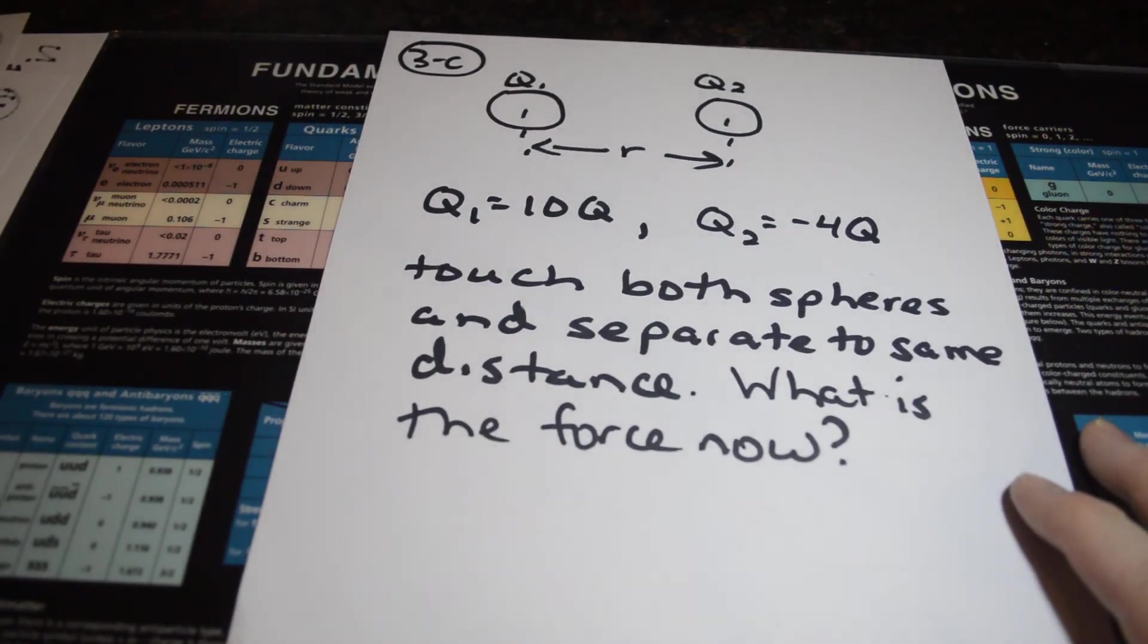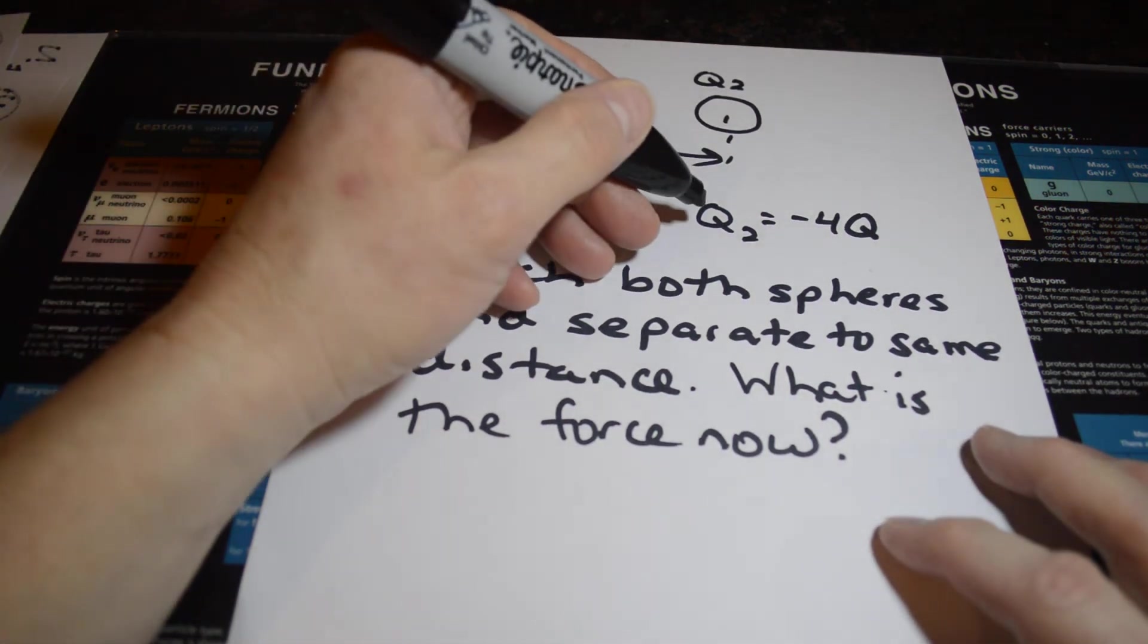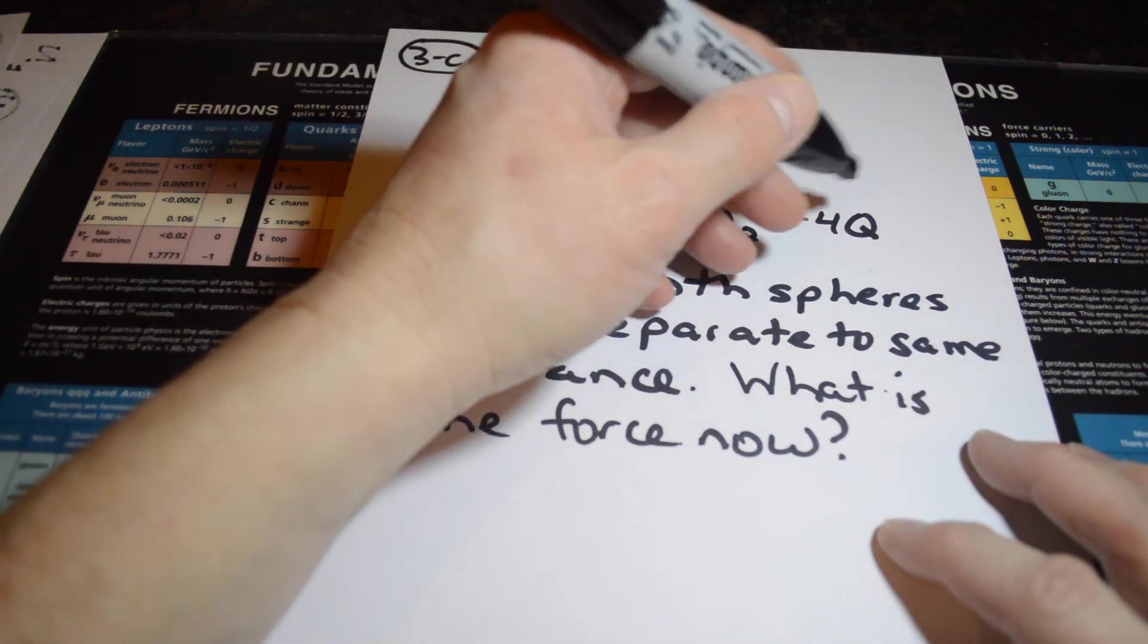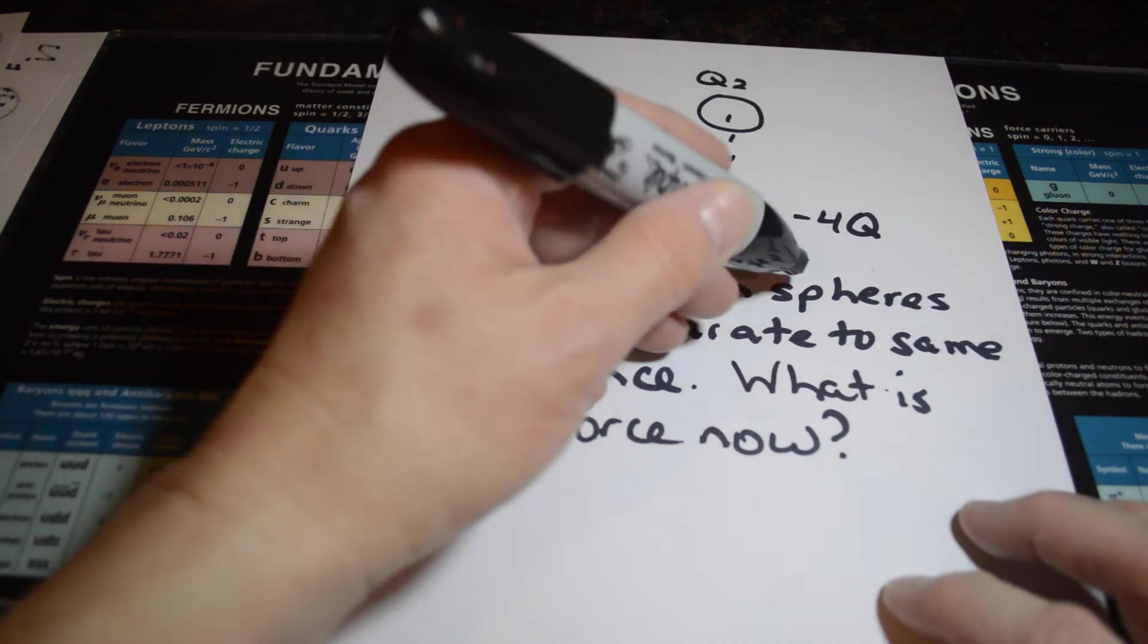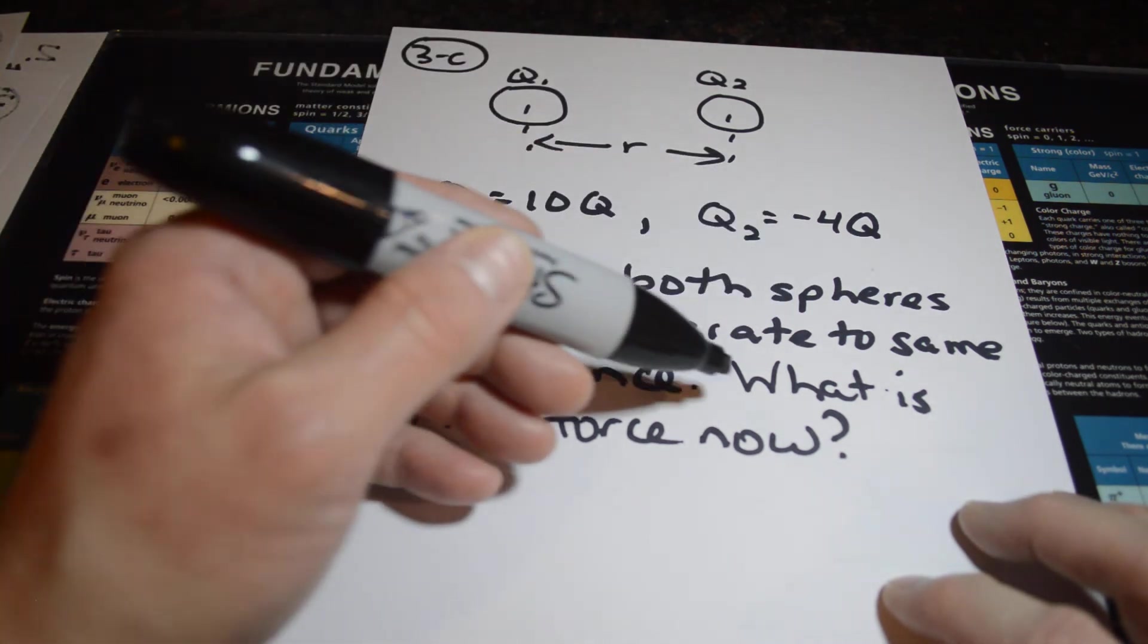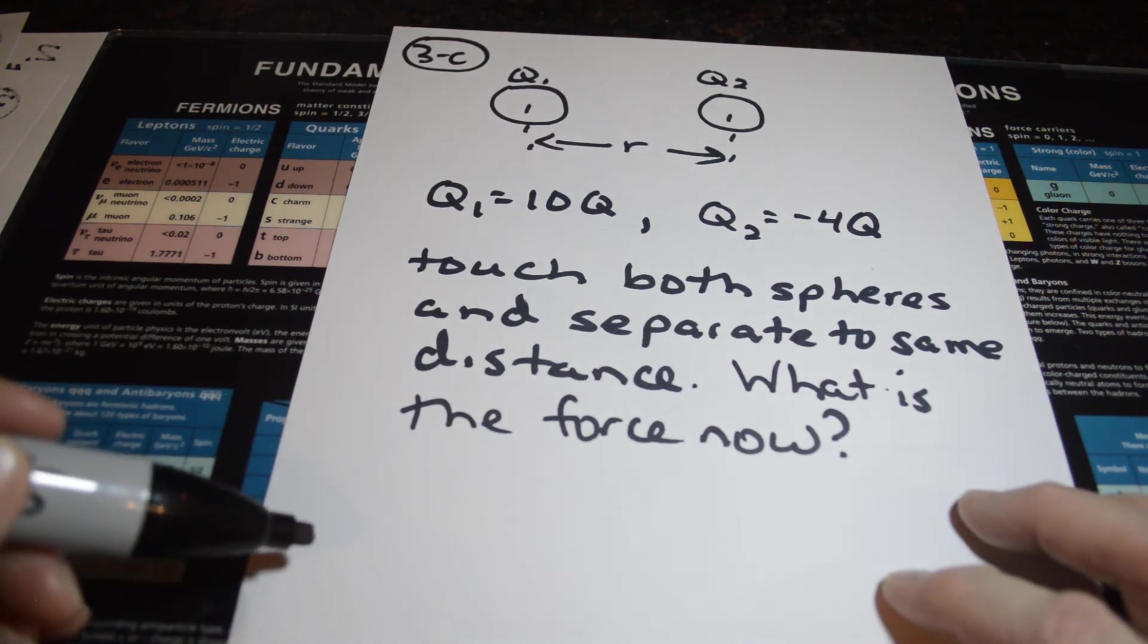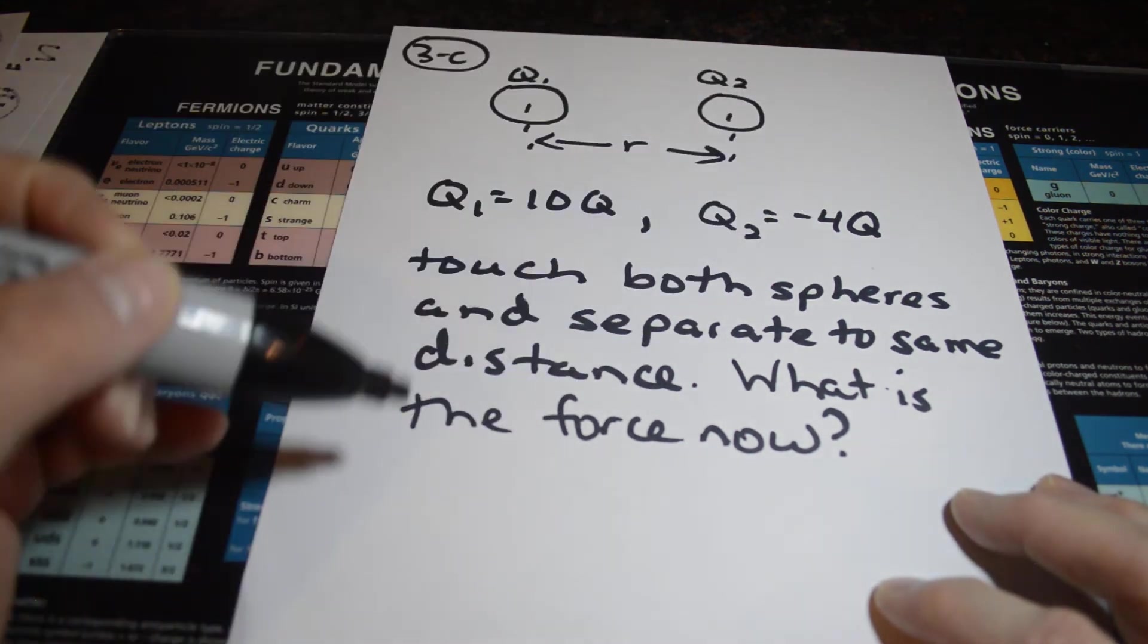The last one puts a couple of two pieces together. It's got Q1 is 10Q. Q2 is negative 4Q. So now you have a negative charge. And what you're going to do is touch both of the spheres, separate them to the same distance, and then ask what is the new force. So you want to pause and try that. 10Q, negative 4Q, and split.